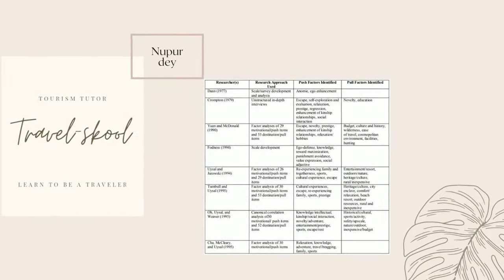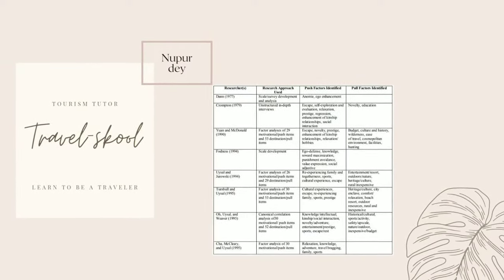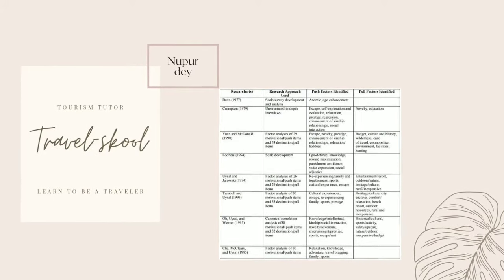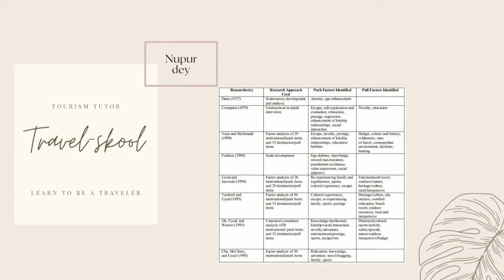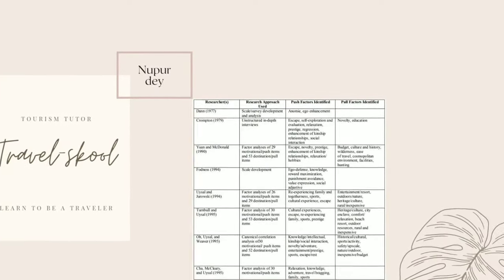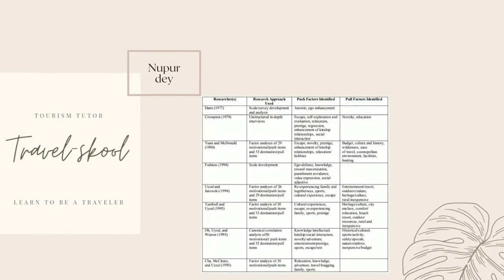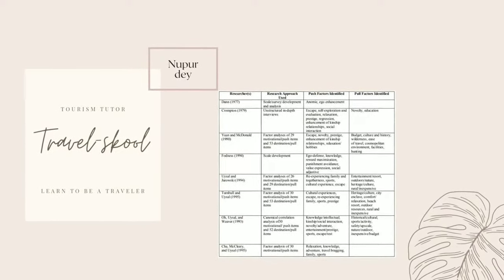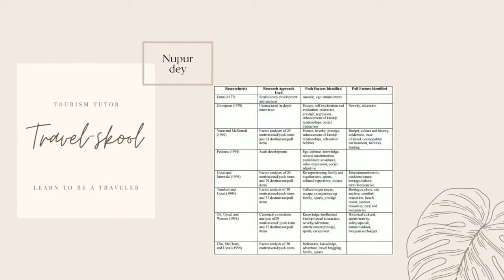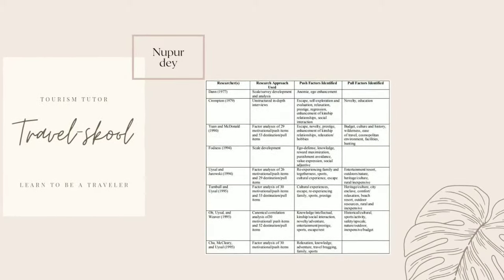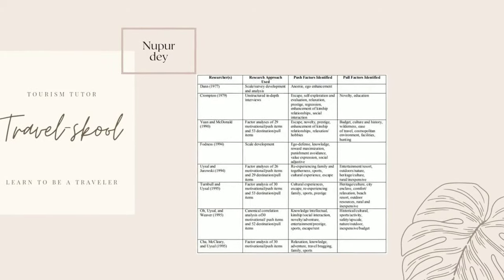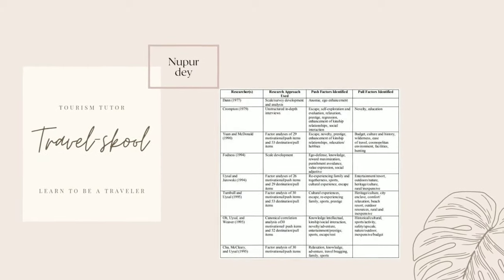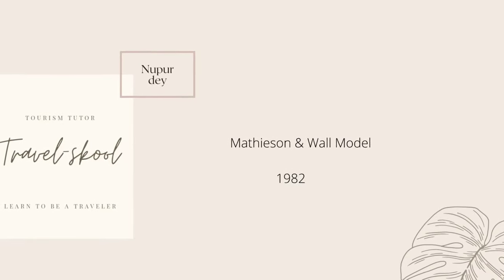This chart shows various researchers who studied the push and pull approach. Fordness in 1994 identified push factors such as ego defense, knowledge, reward maximization, and punishment avoidance. Weaver identified push factors like knowledge, adventure, entertainment, and escape, while pull factors he identified include historical sites, outdoor activities, inexpensive or budget options, and nature-related activities.